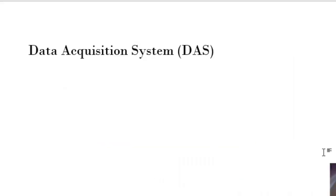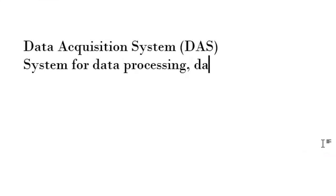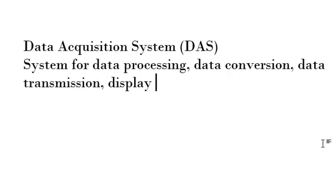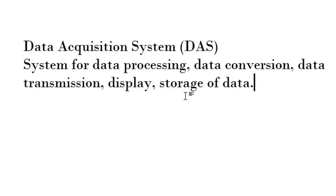We are starting the topic which is data acquisition system. So what is a data acquisition system? Basically this is a system for data processing, data conversion, data transmission, data display, and data storage. This is the basic function of a data acquisition system. The different functions of this system are data processing, data conversion, data transmission, display, and storage of data.